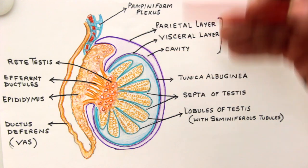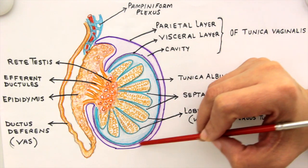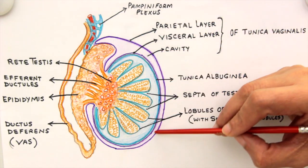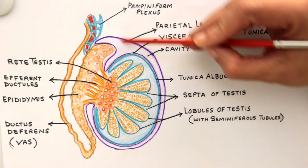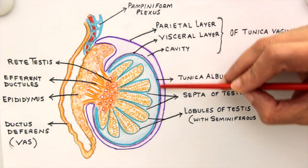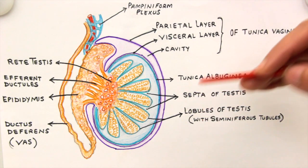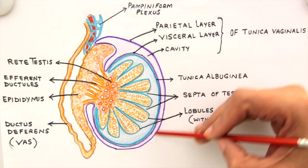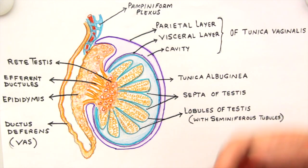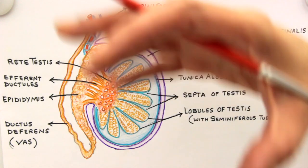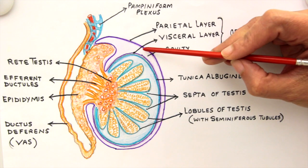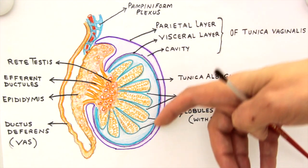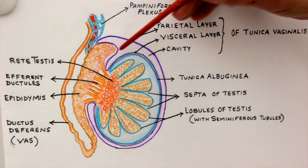Like any other capsule, the tunica vaginalis has a visceral layer directly applied over the organ and a parietal layer, with a potential space or cavity in between. Since it's an extension of the abdominal peritoneum, it contains serous fluid within the cavity — just like the pleura or pericardium. This fluid allows the testes to move freely with friction-free movement.